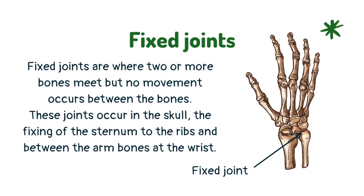Fixed joints are where two or more bones meet but no movement occurs between the bones. These joints occur in the skull, the fixing of the sternum to the ribs, and between the arm bones at the wrist.